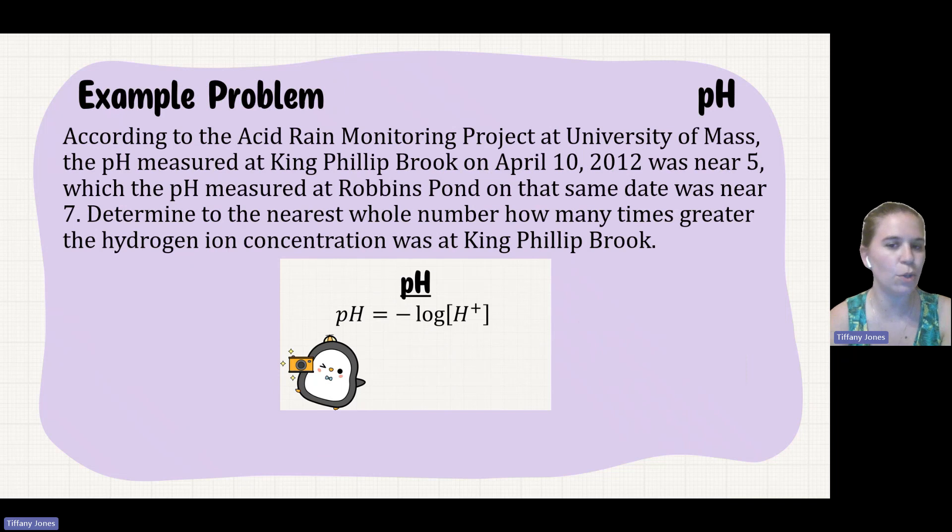Pause the video and see if you can do this problem yourself. According to the Acid Rain Monitoring Project at University of Massachusetts, the pH measured at King Philip Brook on April 10, 2012 was near 5, while the pH measured at Robbins Pond on the same date was near 7. Determine to the nearest whole number how many times greater the hydrogen ion concentration was at King Philip Brook.